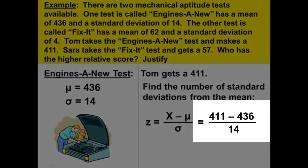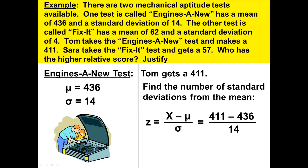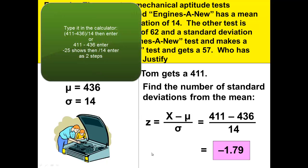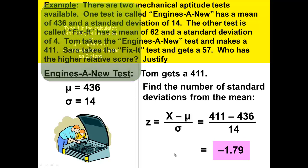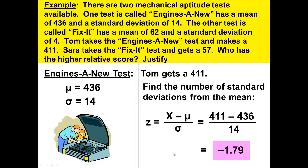411 minus 436 gives me negative 25, divided by 14. Rounded to two decimal places — z-scores should always be rounded to two decimal places — gives me negative 1.79. Be sure to compute the top of your formula first, then divide by the bottom, or place the top calculation in parentheses divided by the bottom, otherwise you will not get the correct answer. Tom's z-score is negative 1.79, meaning he scored below the mean.